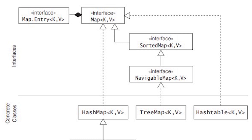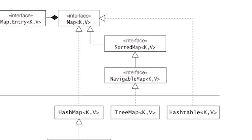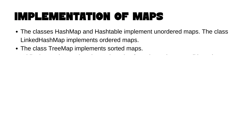If you want ordering according to insertion order, similar to a LinkedHashSet, you have a LinkedHashMap that extends the map class. And then you have a SortedMap, very similar to a SortedSet, where the TreeMap is an implementation of sorted maps.